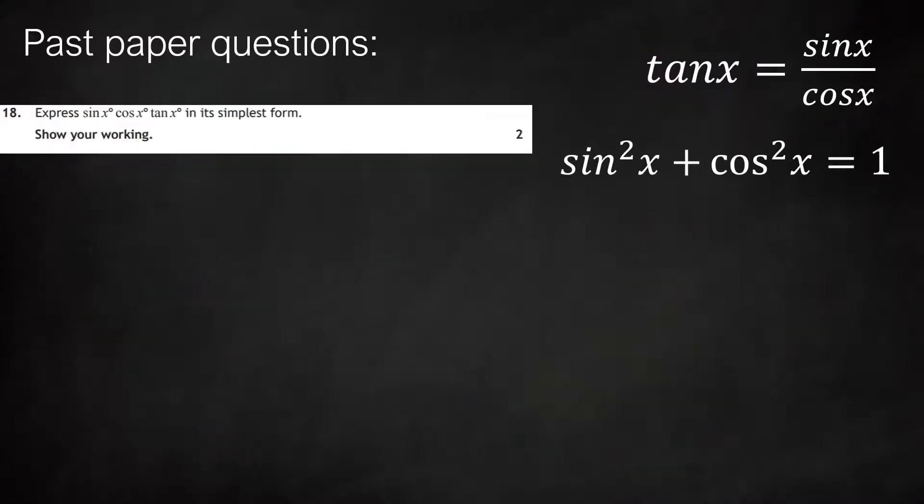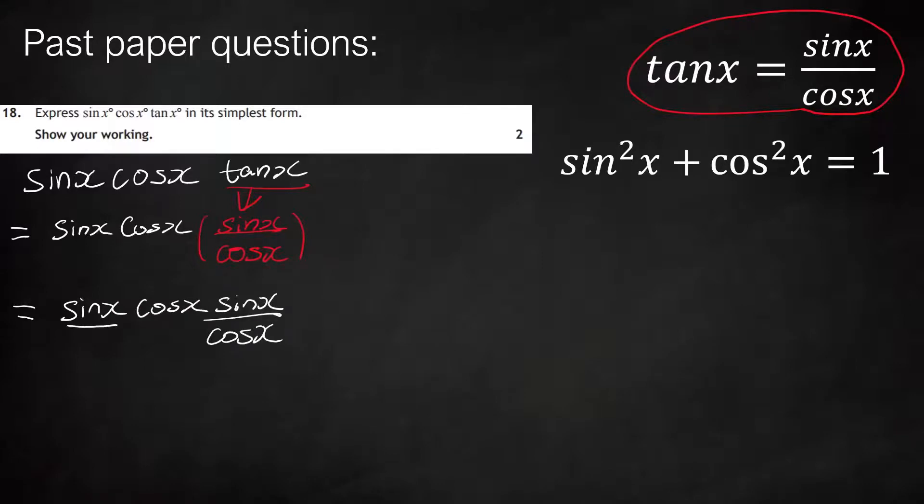Moving to the next one, it's asking us to simplify sine x cos x tan x. Again we notice there's a tan x, so we'll use the tan x identity. We'll write the same thing but substitute in our identity for tan, replacing tan x with sine x over cos x. We'll write it all as one fraction. Just like the last one, you see there's a cos x on top and bottom, so we can cancel them. This leaves us with sine x times sine x, which is sine x all squared, or sine squared x. And that's us done.